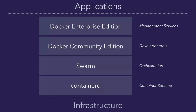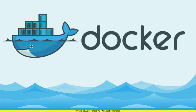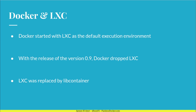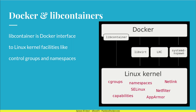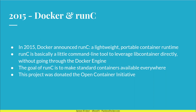The first execution environment of Docker was LXC. It was later replaced by libcontainer starting from version 0.9. Libcontainer is a Docker interface to Linux facilities like cgroups, namespaces, netlink, and netfilter. In 2015, Docker announced runc, which is a lightweight portable container runtime. It's basically a small command-line tool to leverage libcontainer directly without going through the Docker engine. The goal of runc is to make standard containers available everywhere.